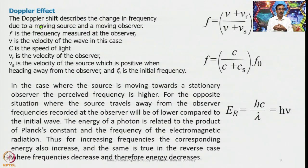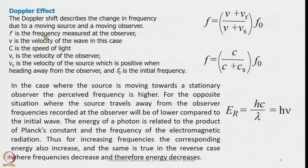The Doppler shift describes the change in frequency due to a moving source and a moving observer. It is given by f = [(v + v_r)/(v + v_s)] × f₀, where f is the frequency measured at the observer, v is the wave velocity, v_r is the velocity of the observer, v_s is the velocity of the source (positive when heading away from the observer), and f₀ is the initial frequency. When the source moves towards a stationary observer the perceived frequency is higher; when the source travels away, the recorded frequency is lower.